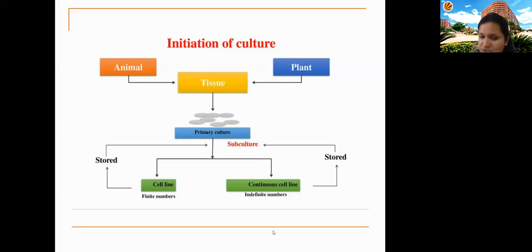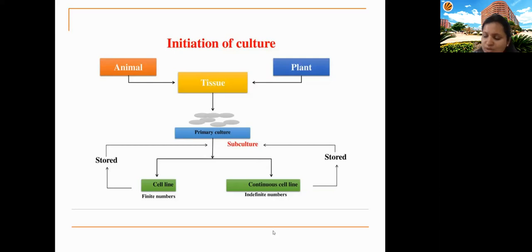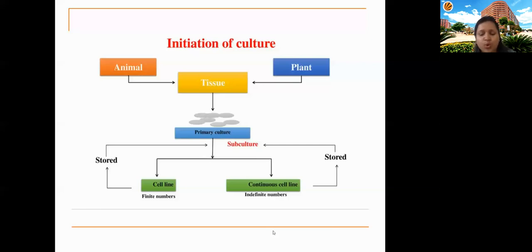Even with fresh media and optimal conditions, cells age with successive divisions and eventually lose their capacity to divide — they will not go beyond about 30 divisions. However, scientists have fused these secondary cell lines with cancerous cells to create hybrids. Since cancerous cells have the power to grow indefinitely without contact inhibition, the resulting hybrid cell line — known as a continuous cell line — can grow indefinitely beyond the 30-division limit.